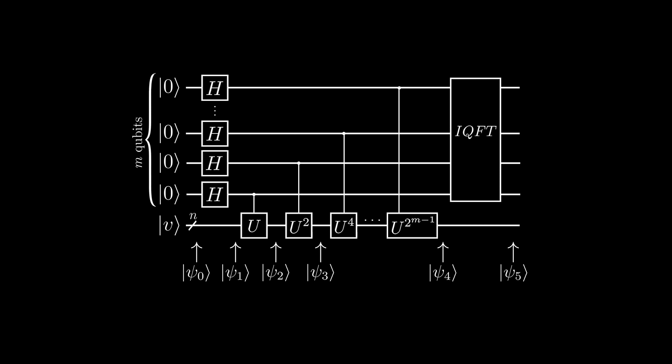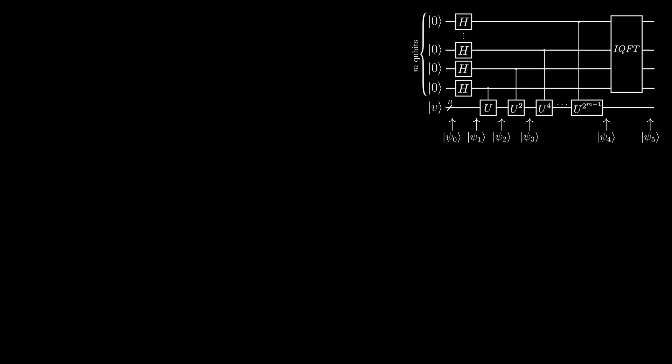Let's start going through the circuit. At ψ₀, we have the state |0...0⟩|V⟩. Then at ψ₁, we apply the Hadamard gates to all the qubits in the first register.